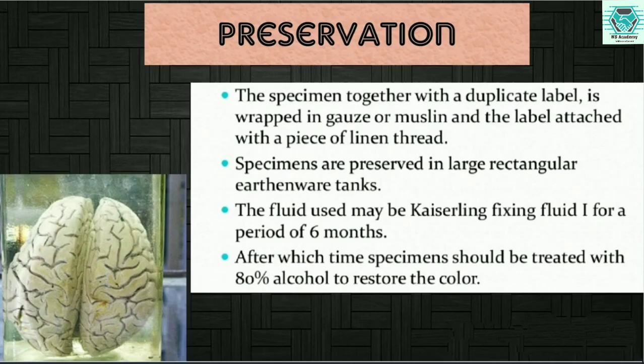Now moving to the preservation technique. The specimen together with a duplicate label is wrapped in gauze or muslin and the label attached with a piece of linen thread. The specimens are preserved in large rectangular tanks. The fluid used may be Kaiserling fixing fluid number one for a period of 6 months, after which it should be treated with 80% alcohol to restore the color.